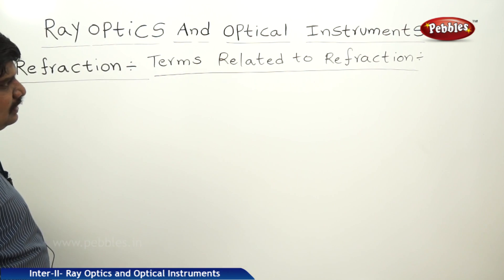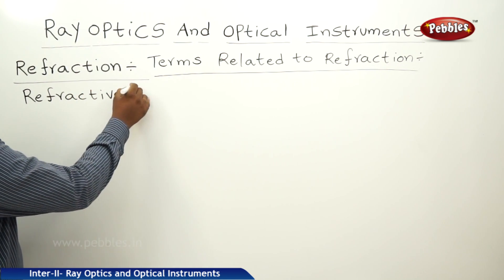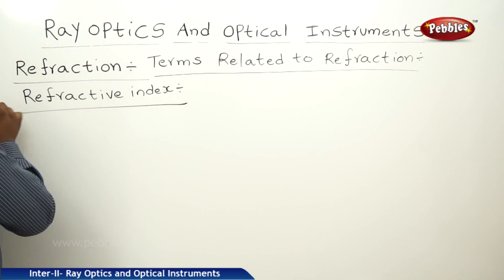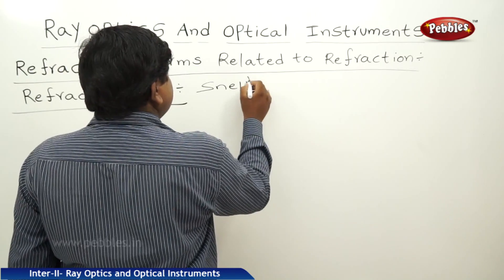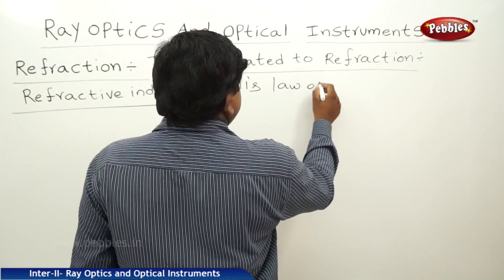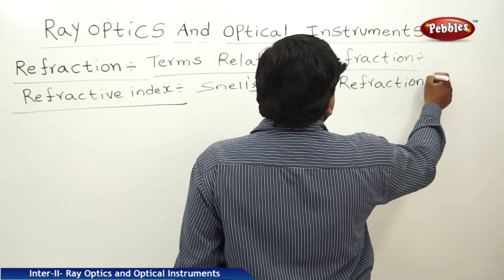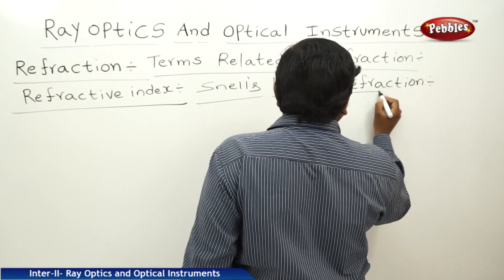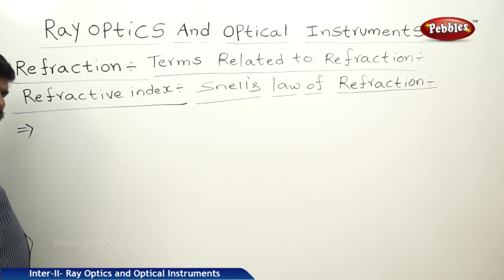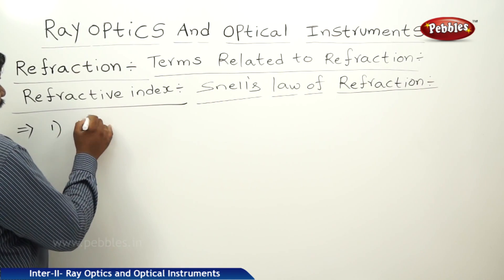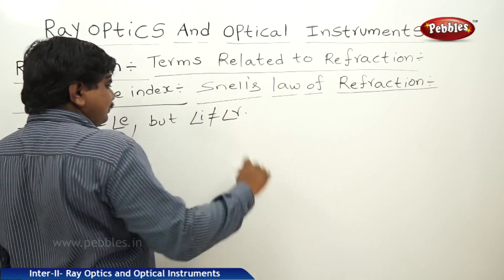The next concept related to refraction is refractive index. To understand this concept, we need to think about Snell's law of refraction. The first law states that the angle of incidence is equal to the angle of emergence, but the angle of incidence is not equal to the angle of refraction.